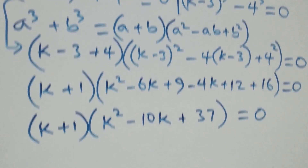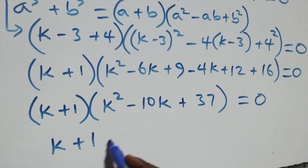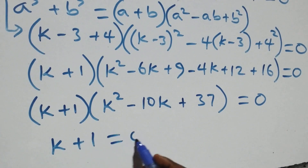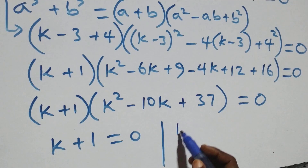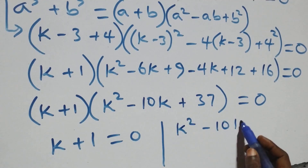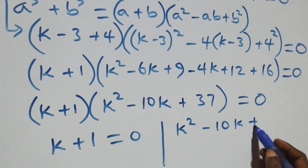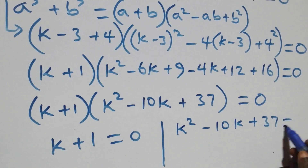Here we have two possible cases as well. The first one: k + 1 = 0; or the second one: k² - 10k + 37 = 0.